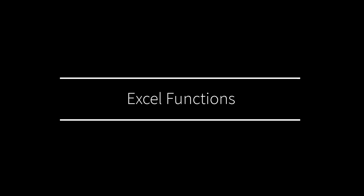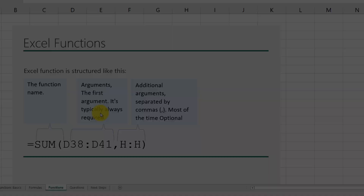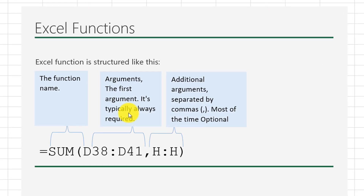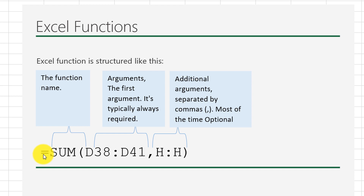Now let's look at Microsoft Excel functions. Functions are a little different from formulas but have a lot of similarities. You still need to type an equal sign, then type the name of the function, then you typically have mandatory arguments — which can be a cell reference, a value, or a range — and then a list of optional arguments.